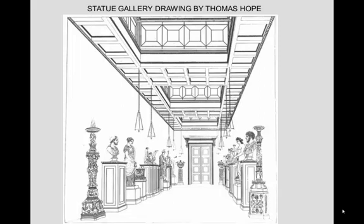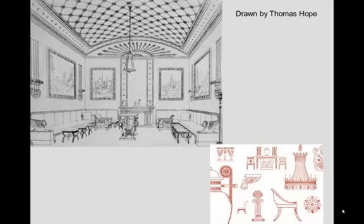Here you can see a drawing done by Thomas Hope, which is his statue gallery. The ceiling is drawn in a square geometric pattern that might have been built out with wood. The next slide shows another example of a barrel vault ceiling with a geometric design, as well as drawing details of chairs, tables, and decorative motifs by Thomas Hope.